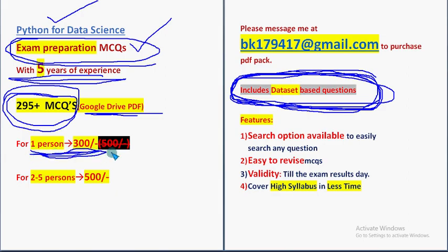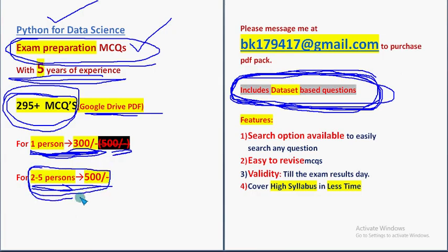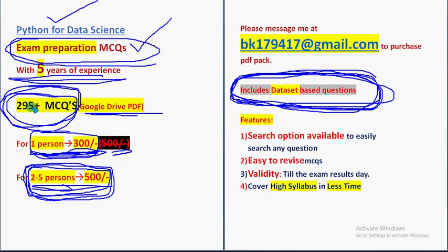For one person it is 300 rupees. Previously it was 500, but we have reduced that for students. For two to five persons combined it is 500 rupees — so if you take this pack along with your friends or classmates, the combined price will be 500. Individually you can share a lower price with your friends. If you are one person, you can get it for 300 only.